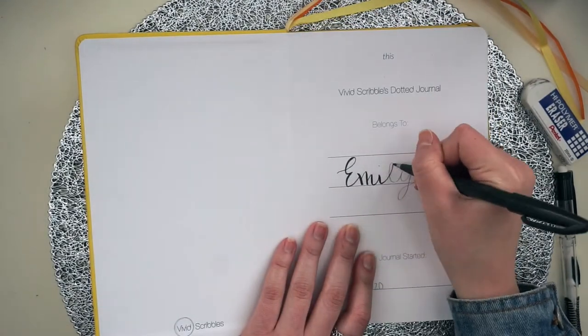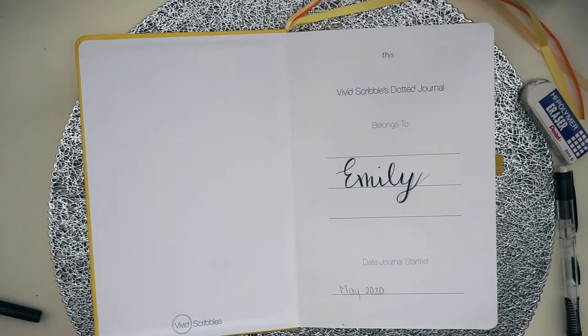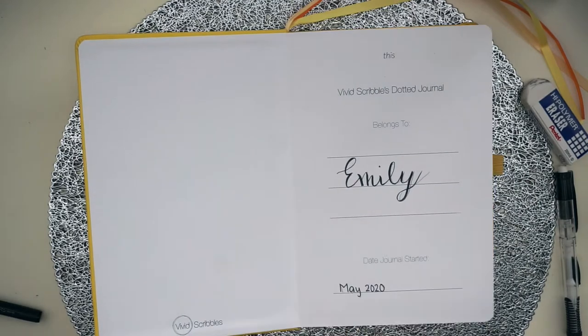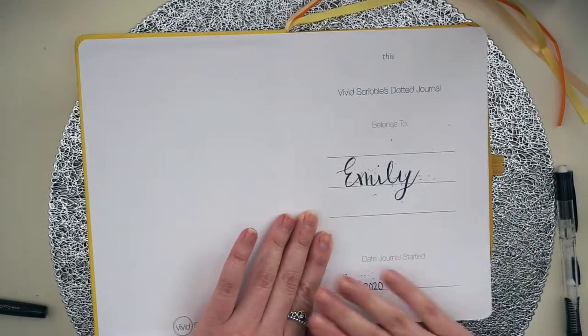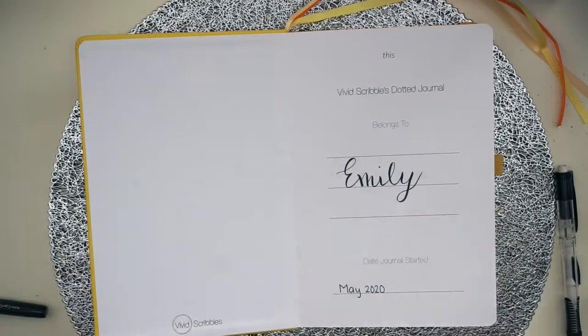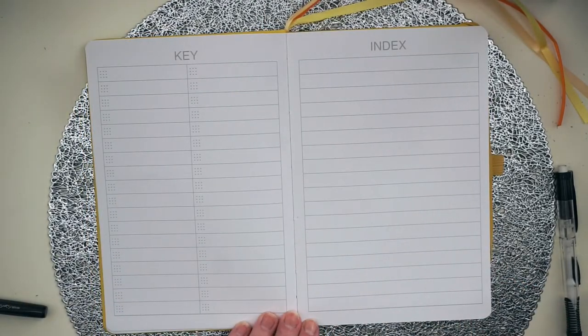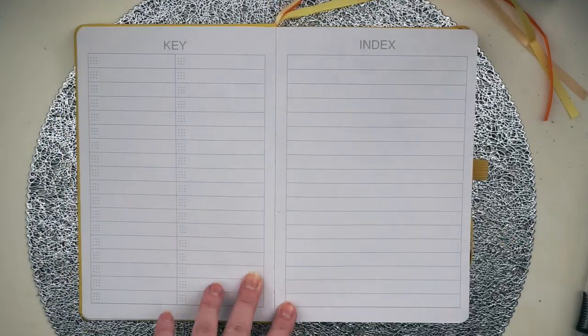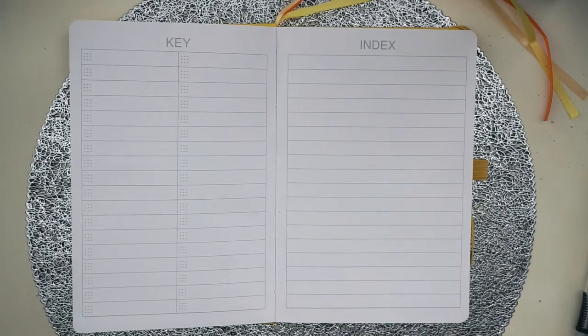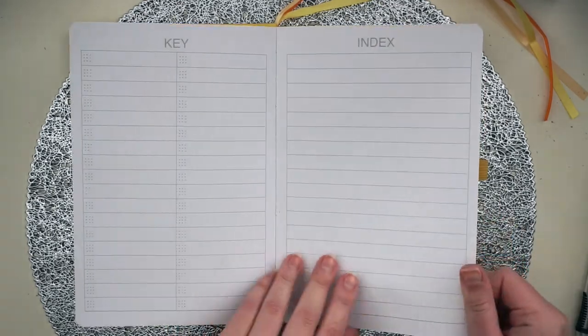Let's get started. To start out, I'm going to be writing my name, Emily, in the cover page and it says date started and it is May 2020. There's a key and index as well, but personally, I don't get much use out of a key or index, so I decided to leave these pages blank.